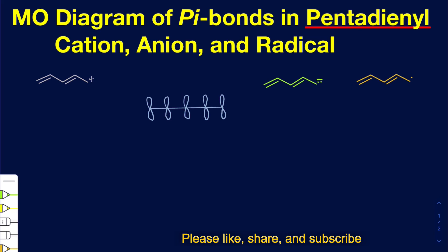So on the left side, I do have this cation here. The very first thing you want to do is be able to count how many unhybridized p orbitals you have in each case. Every single carbon on this left one is going to be sp2 hybridized. As a result, that leaves one p orbital unhybridized, and that gives me five p orbitals that are going to be unhybridized.